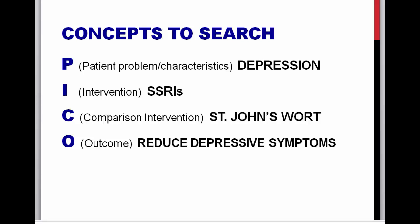The P element of this question is depression. The intervention we are considering is SSRIs, and the comparison in this case is St. John's Wort. The desired outcome in this scenario is to reduce depressive symptoms. We are not going to search for that terminology because it's already implied by searching for depression itself.